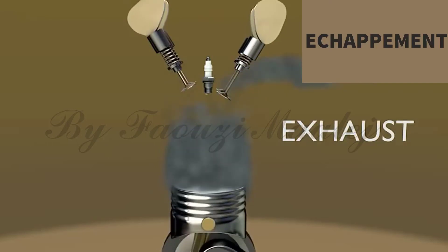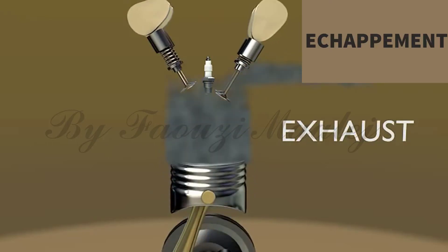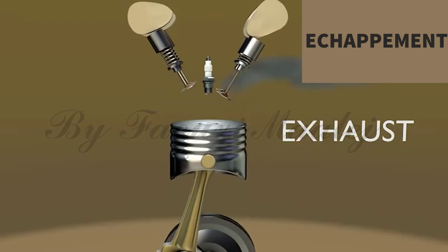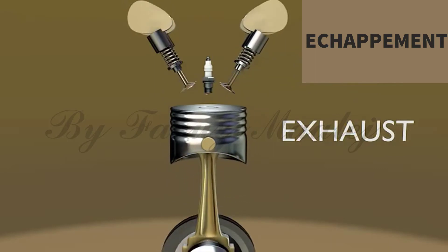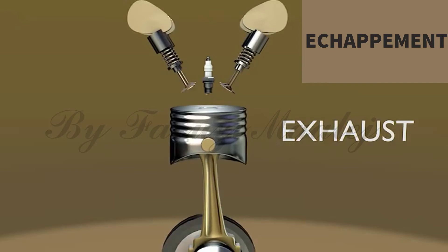Fourth, exhaust stroke. The exhaust valve is opened, and the piston travels back up, expelling the exhaust gases through the exhaust valve. At the top of the stroke the exhaust valve is closed. This process is repeated.